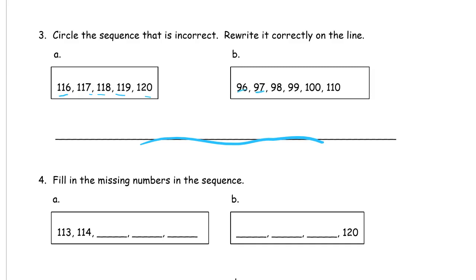96, 97, 98, 99, 100, 110. It switched from counting by ones to adding, it went up by 10 all at once here on the end here. So that one is the one that's incorrect. So I'm going to circle that one and rewrite it correctly on the line.